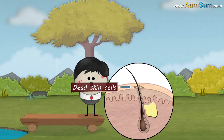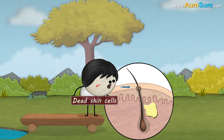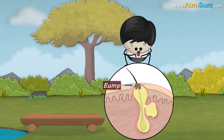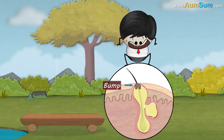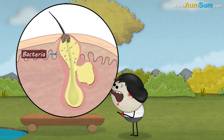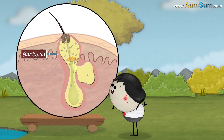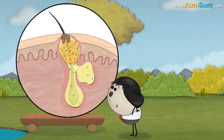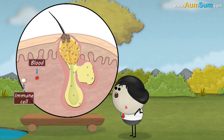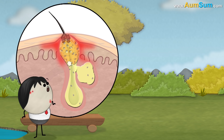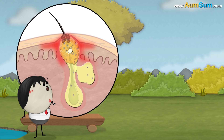However, sometimes the pore gets blocked due to dead skin cells. Due to this blockage, the sebum gets accumulated, creating a bump. As sebum is a very good source of nutrients for the bacteria in our skin, they start to grow in that area, leading to an infection. Our immune system responds to this infection by sending blood and immune cells. Blood makes the area red, whereas the immune cells kill the bacteria, resulting in inflammation and formation of a pimple.